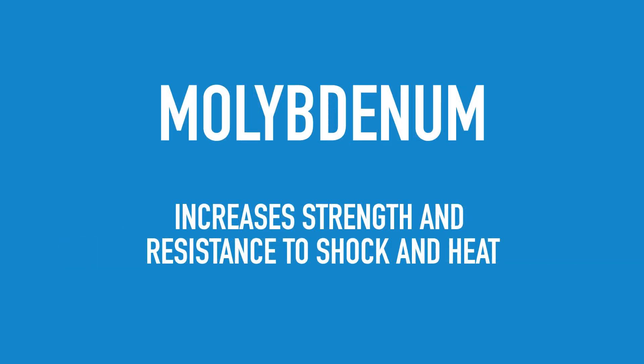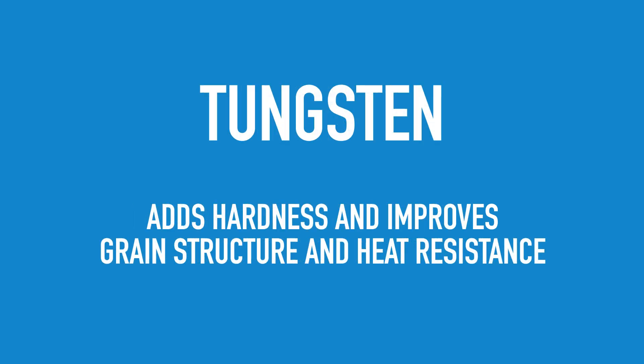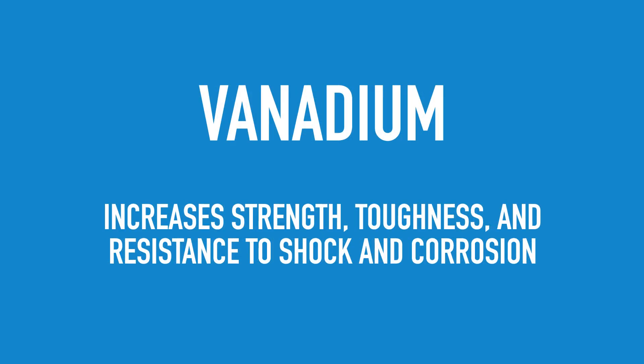Molybdenum, which is used to increase strength and resistance to shock and heat. Nickel, used to increase strength and toughness while also improving corrosion resistance. Tungsten, which adds hardness and improves grain structure while improving heat resistance. Vanadium increases strength, toughness and shock resistance with improved corrosion resistance.